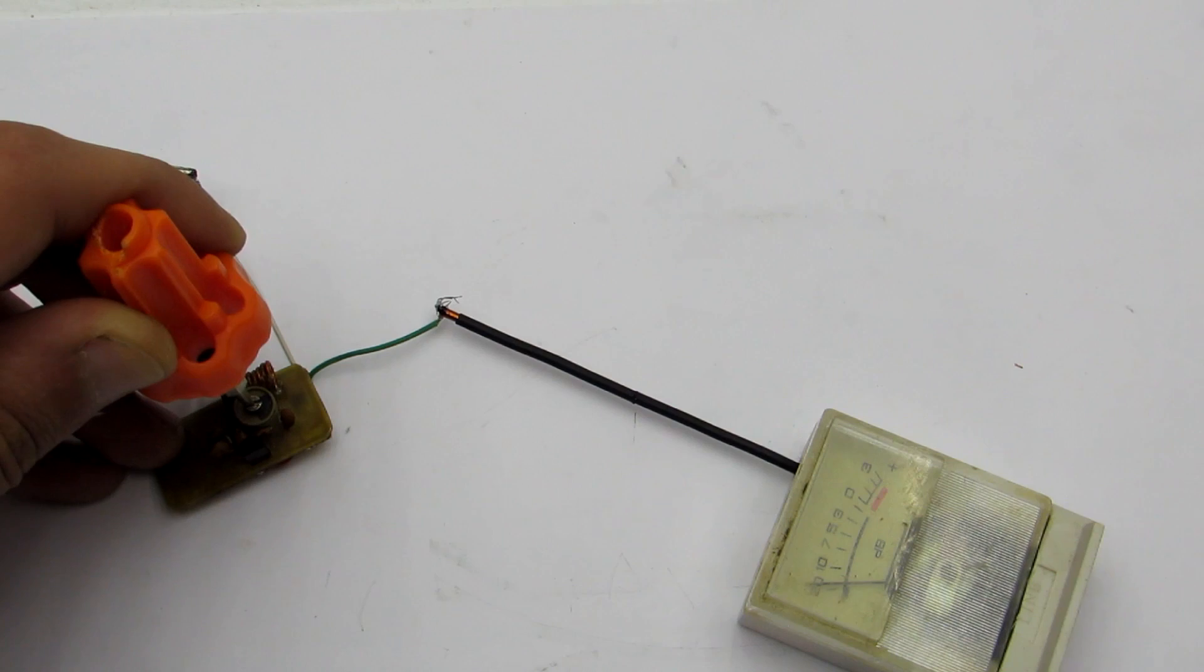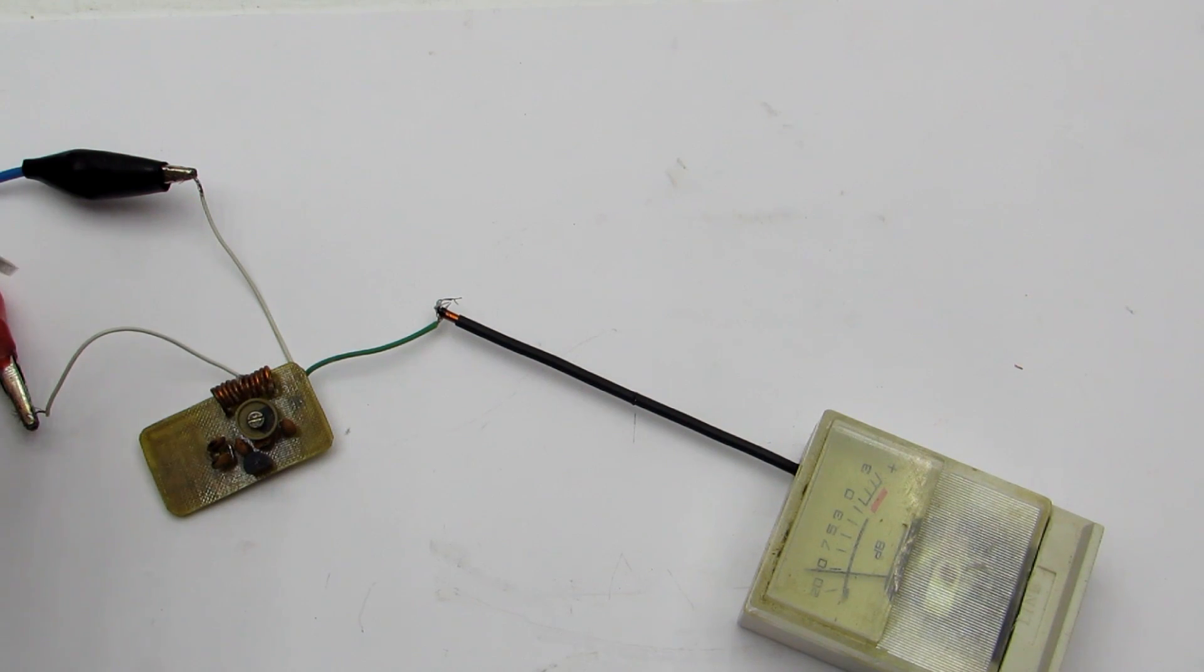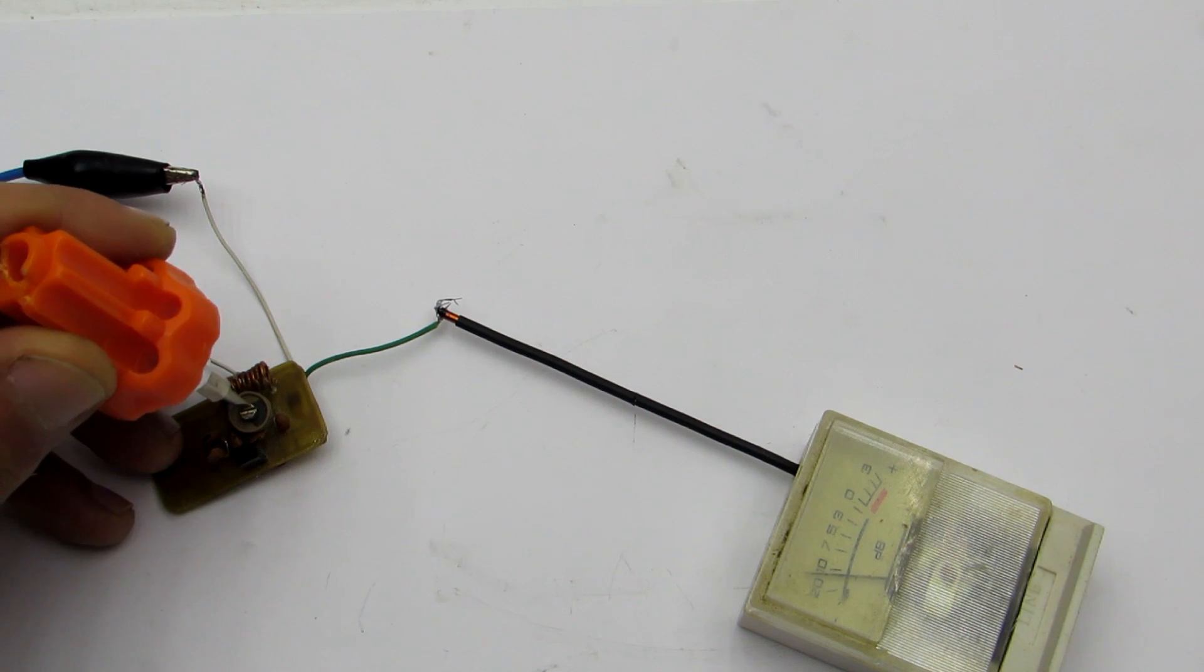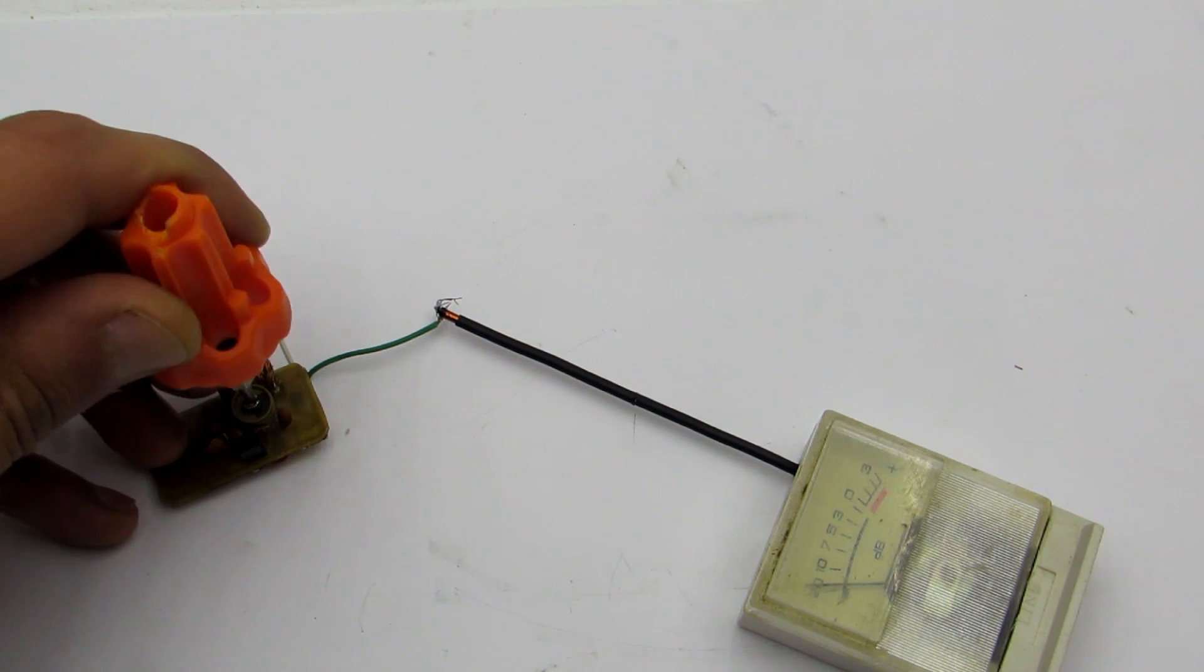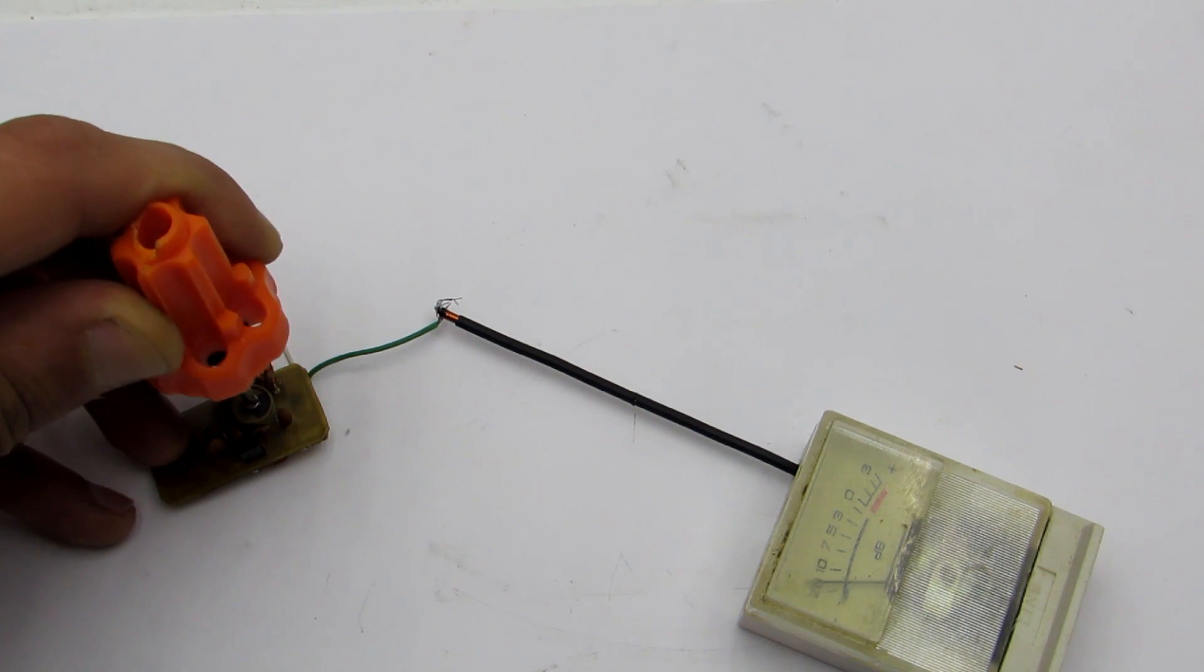Many transmitter schemes have variable capacitor in the resonant circuit. We need to carefully rotate it. We must rotate a little bit, remove the hand, look at the arrow indicator. Repeat it until getting maximum deflection.